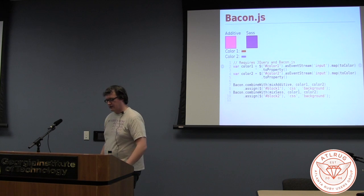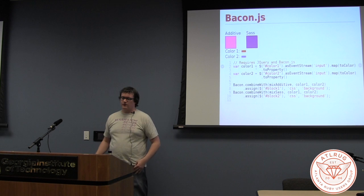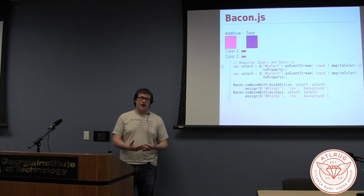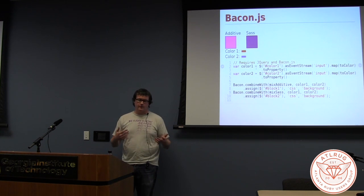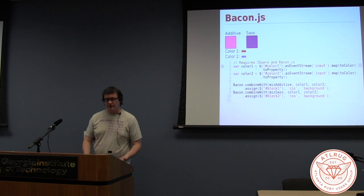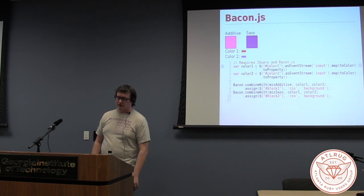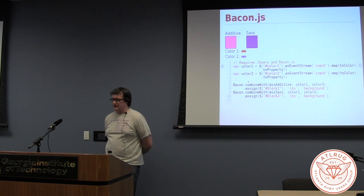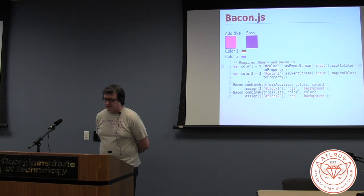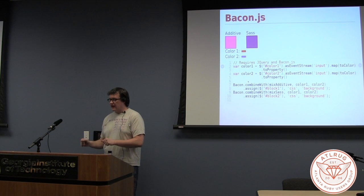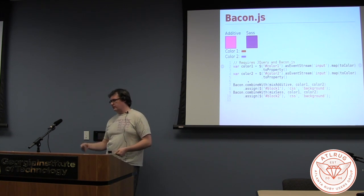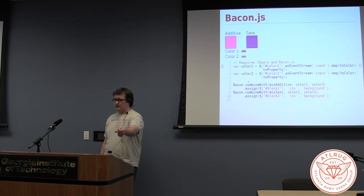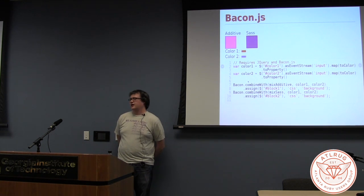That's working in a similar way to the other ones, but we're working more with properties here. We create a property out of the first color picker and a property out of the second. Now we're using bacon.combineWith — you can pass it other Bacon elements. In this case I'm passing it both color one and color two. Normally you can't just access the property's value directly. But if you use property-creating functions like combineWith, we pass it mixAdditive — a function that just adds the colors together. It'll pass the actual values of color one and color two into mixAdditive, then return the answer back out in the form of a new property, which we assign to the CSS background color of the first div.